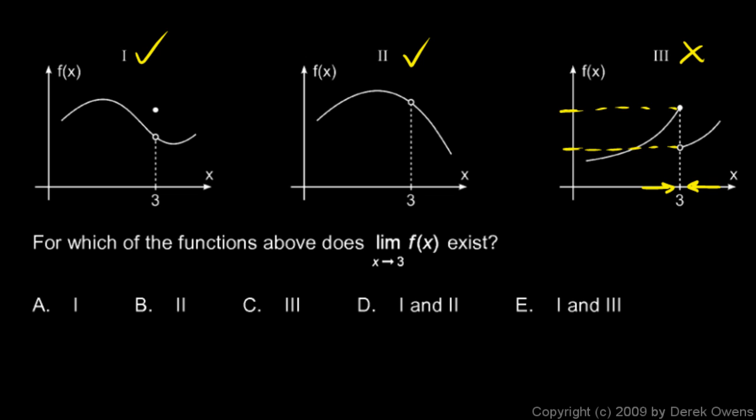So the question, for which of these graphs does the limit as x approaches 3 exist? It's one and two, so your answer is D.